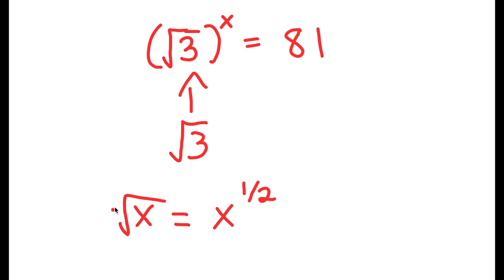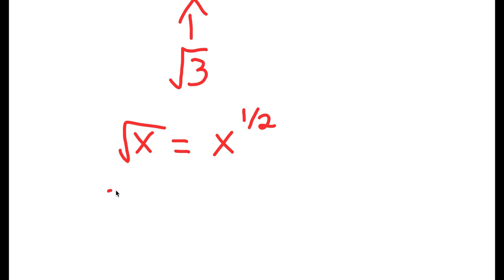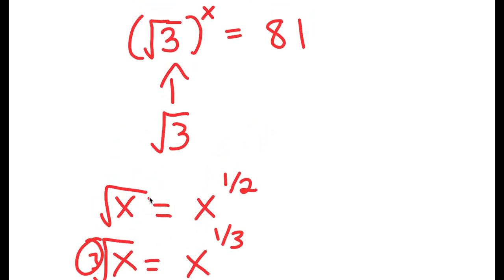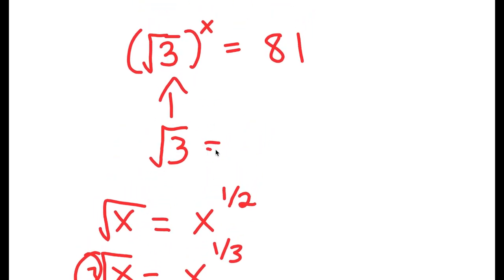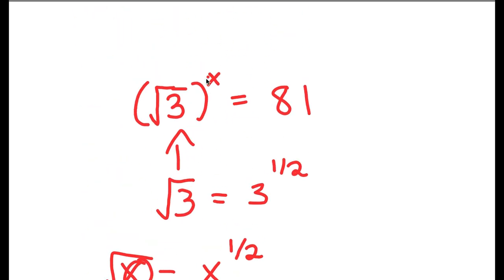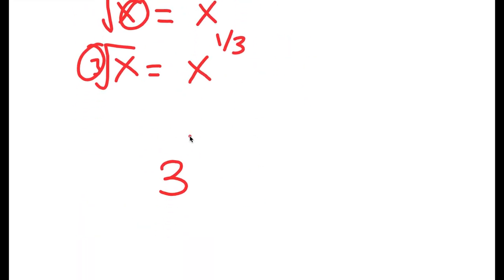The cube root of a number is that number to the power of 1 over 3. So the square root of 3 can be rewritten as 3 to the power of one half. Substituting that in, I get 3 to the power of one half, raised to the power of x, is equal to 81.